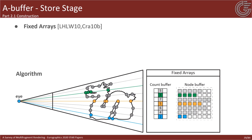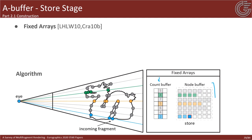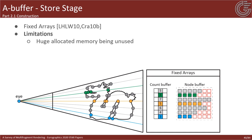A simpler approach is the fixed-array buffer. These techniques allow storage of all fragments in fixed-size per-pixel arrays, usually implemented with an additional count buffer. Compared to linked lists, there is no need to maintain node pointers and fragments are stored in contiguous memory locations, which directly improves cache coherence and speed. On the downside, these methods suffer from wasted allocated memory space because typical scenes have uneven fragment distribution while these methods pre-allocate a fixed-size array for all pixels.